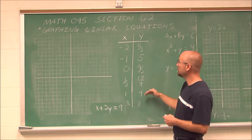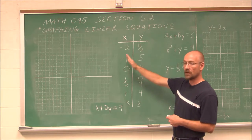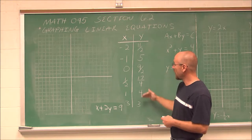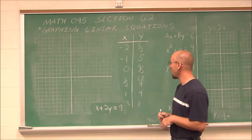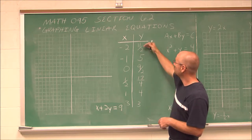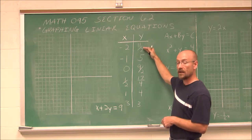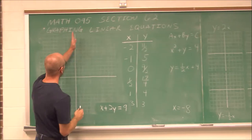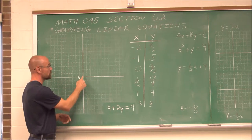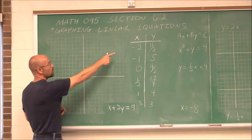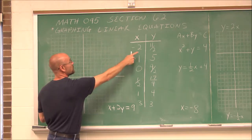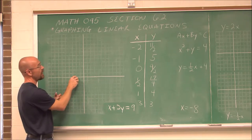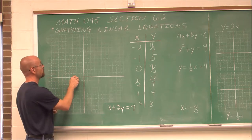Since we have a t-table, and we know that for a value of x we get a value of y, let's go ahead and put a few of those ordered pairs on the graph. Let's look at the first one: negative 2 and 11 halves — that's the same as 5 and 1 half. So when x is negative 2, I move 2 to the left, and since 11 halves is positive, I move up 5 and 1 half.